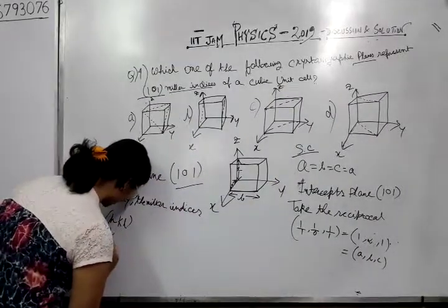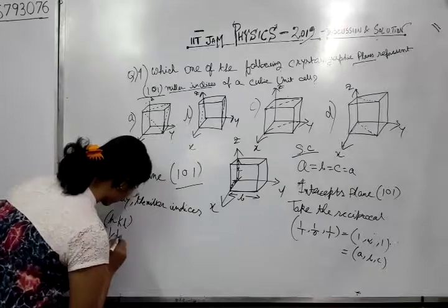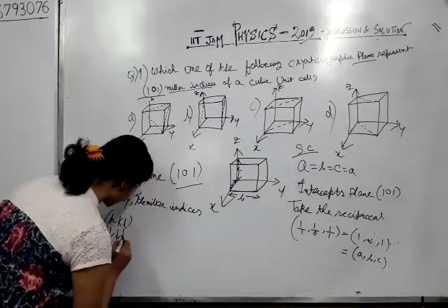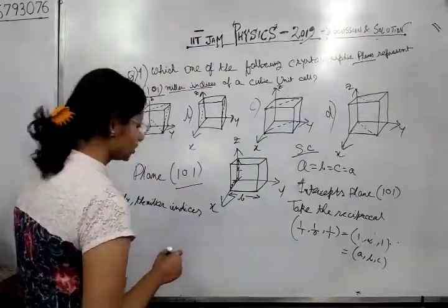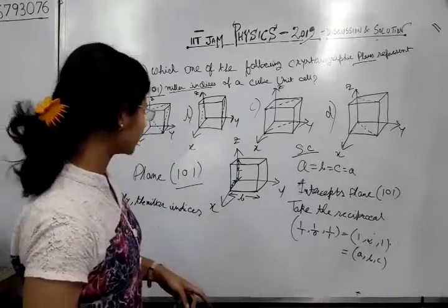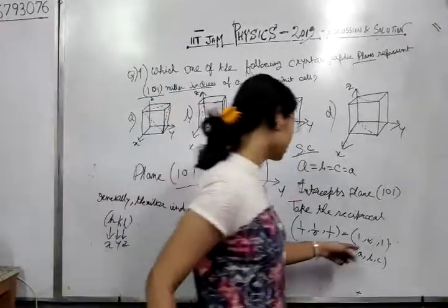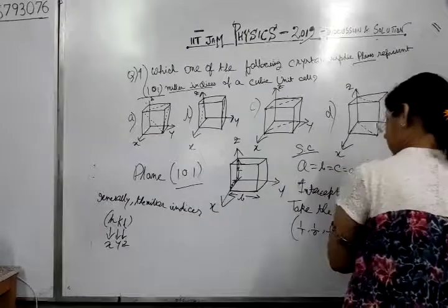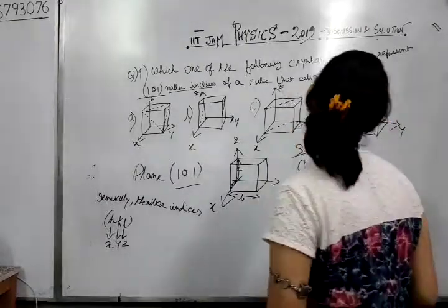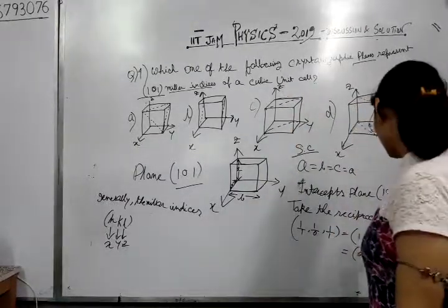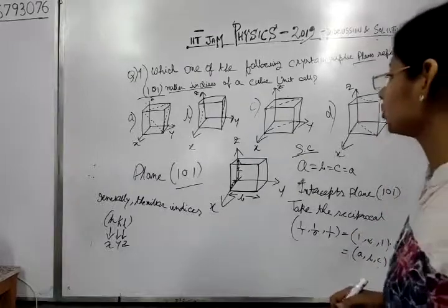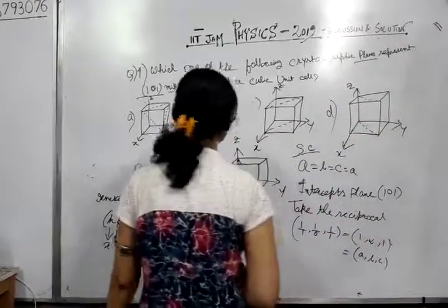H corresponds to X, K corresponds to Y, and L corresponds to Z. So here H is 1, K is infinity, and L is 1.